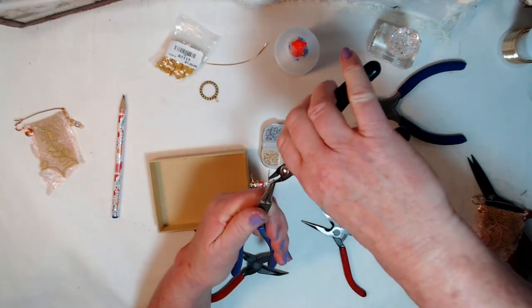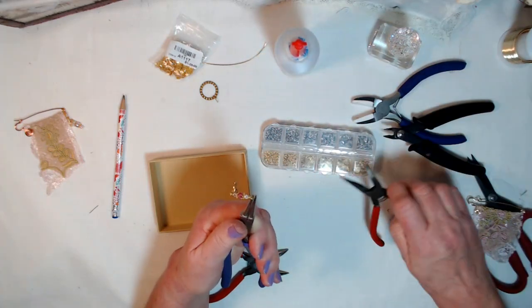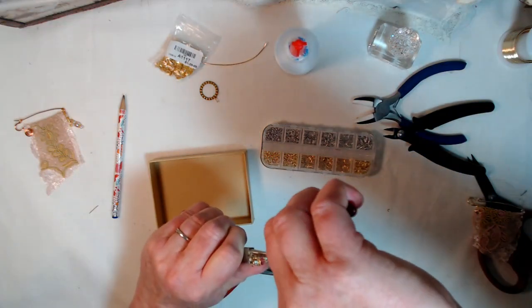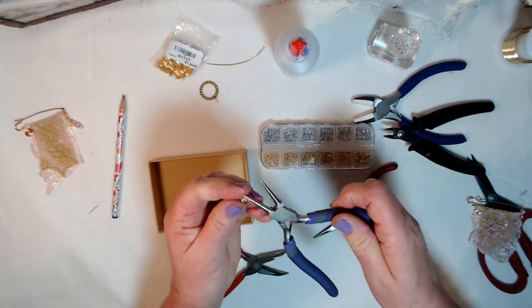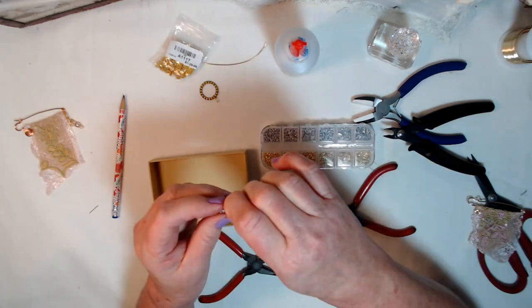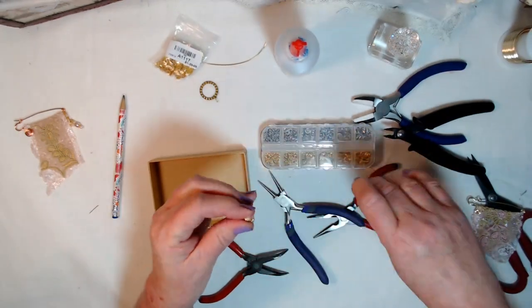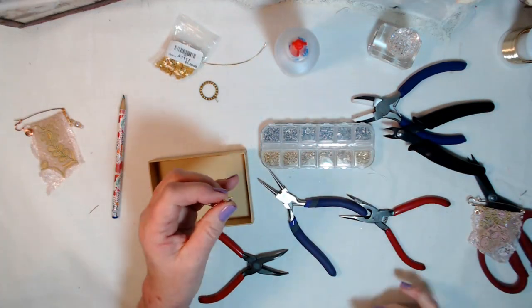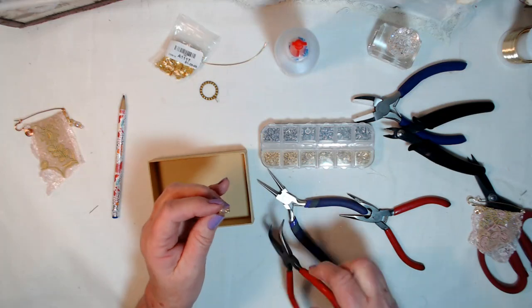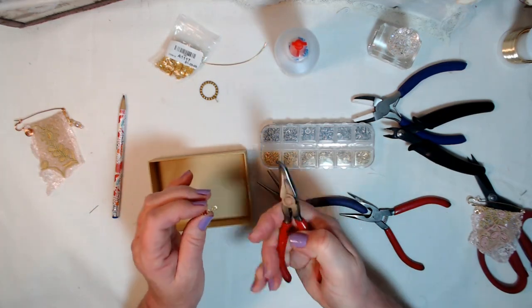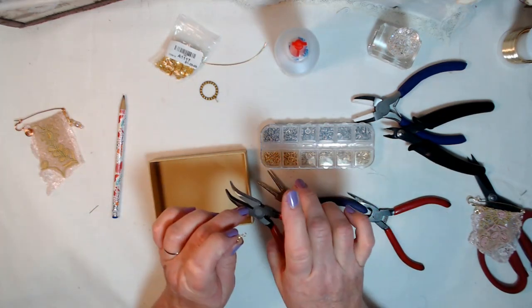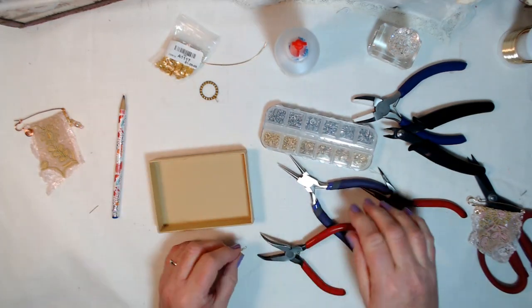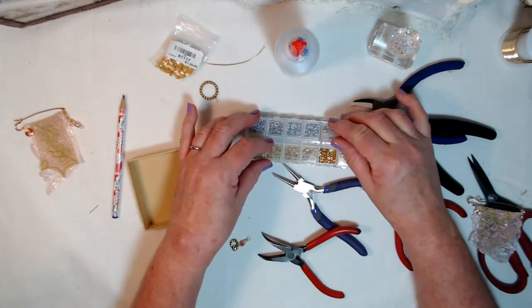And then we're going to take our flush cutters or our nipper tool, whatever you call it, and we're going to cut that little guy off. And then we are going to press him down just to make sure there's no sharp edges. I think I see a little bit of an edge. There we go. So now we are ready. I'm just using the flat part of these pliers, this part right in here, and I am just flattening that because I want it to be really flat. Now we're ready to attach it to the bulb pin.